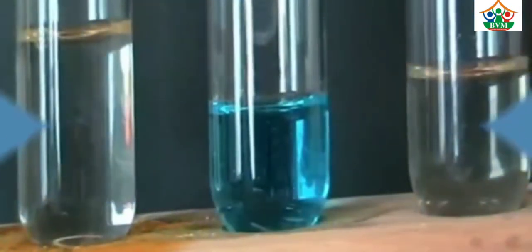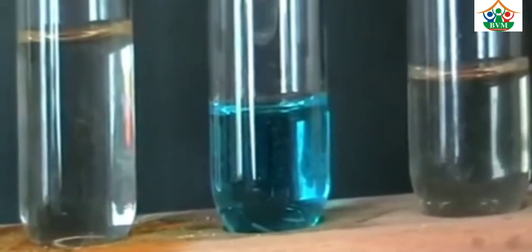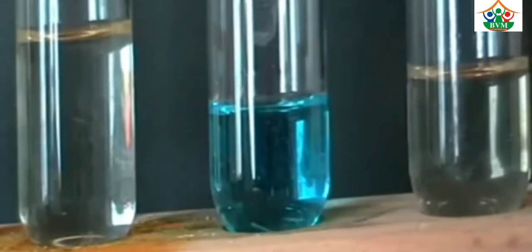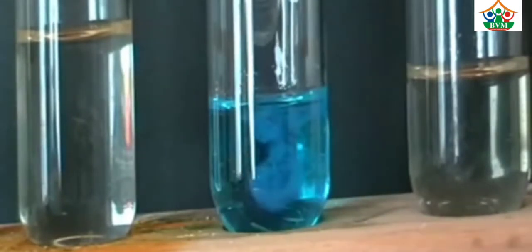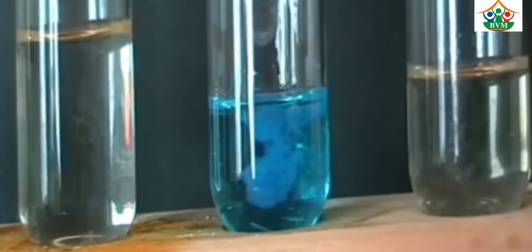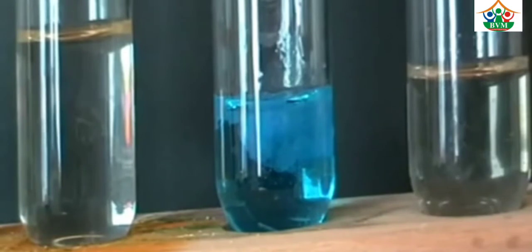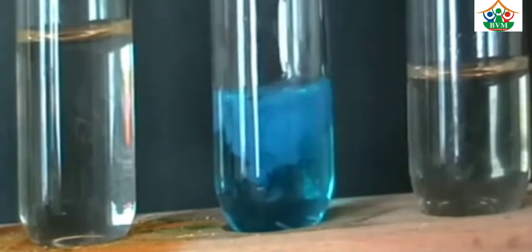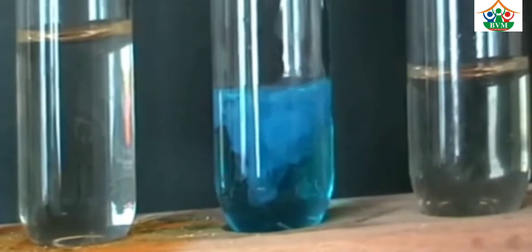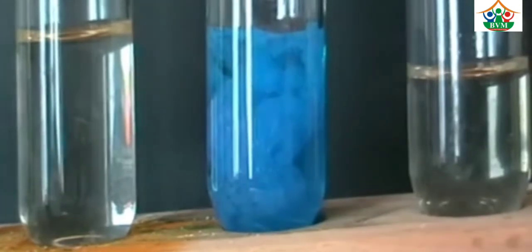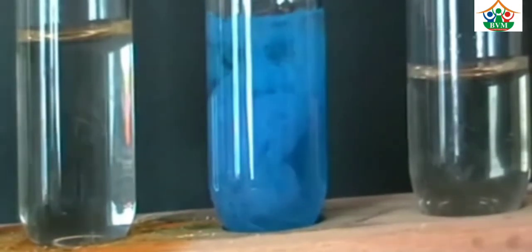Third one is copper. When you add sodium hydroxide to copper solution, a blue precipitate is formed. You can say a bluish-white precipitate is formed. But when you add excess sodium hydroxide, the precipitate remains insoluble.